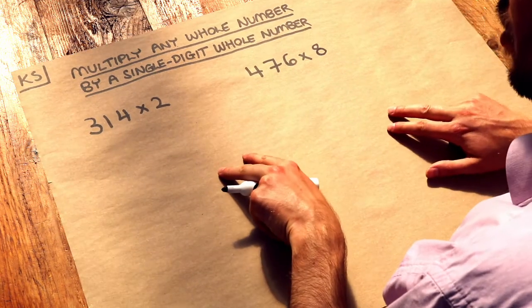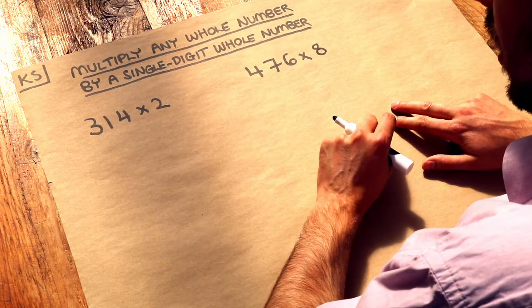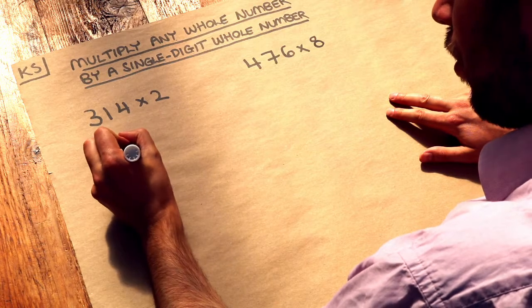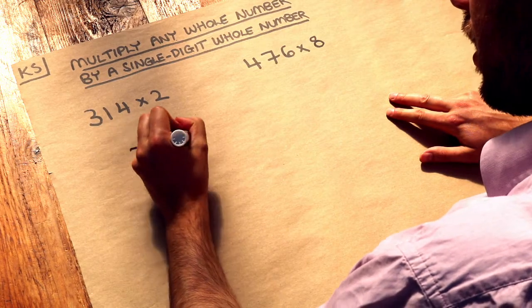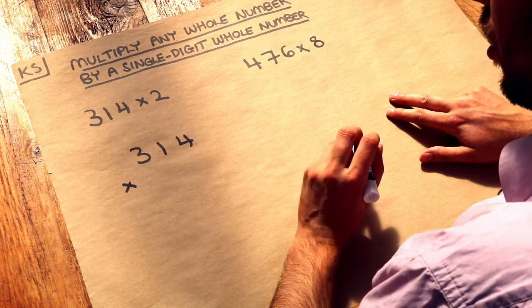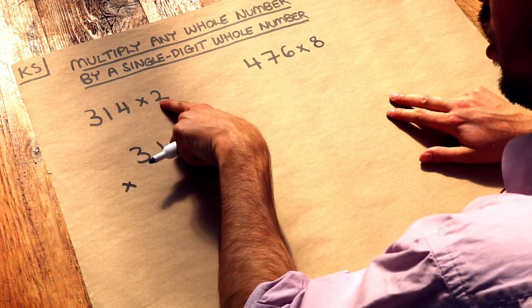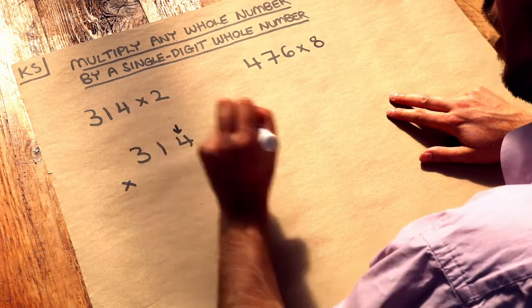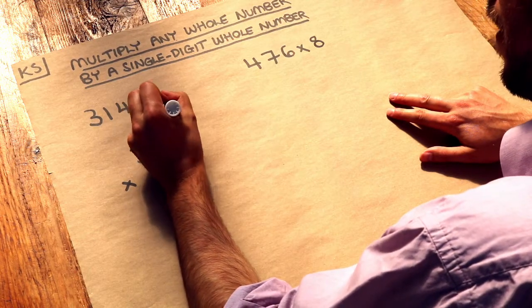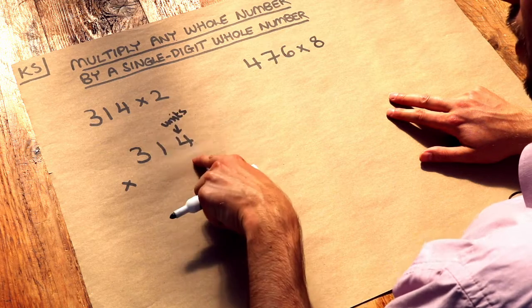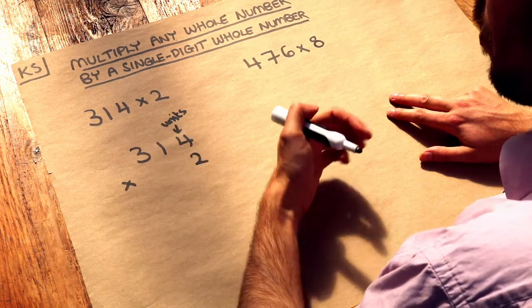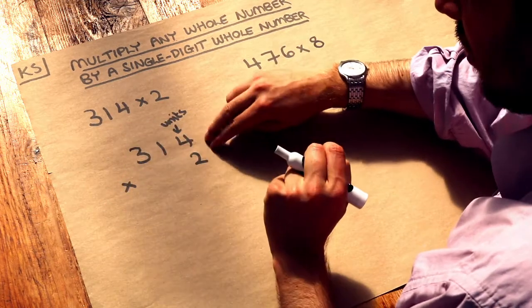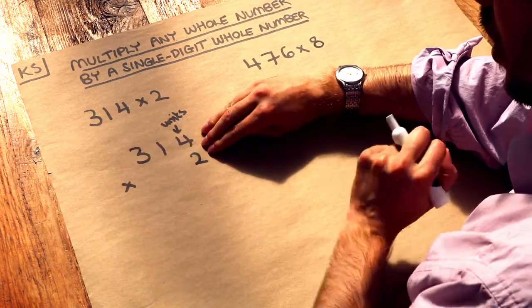Now what we first do is to arrange these numbers in a kind of column like fashion. So if we've got the 314 and we want to times it by the 2, we're just going to make sure that the 2, which is a units digit, appears in the units column because the 4 is a units digit here that has to line up with this 2 here. So if we're multiplying whole numbers together, basically just make sure it's right aligned, so this right line here you kind of push the numbers up to that.